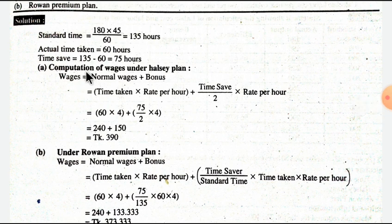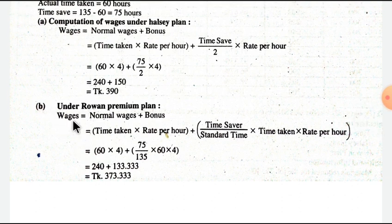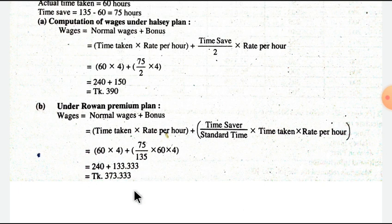Calculation of wages under the Halsey plan: wages equals normal wages plus bonus. Normal wages is the actual time taken multiplied by rate per hour. Bonus is the time saved divided by two, multiplied by rate per hour. Time taken is the actual time. Under another method, bonus is time saved divided by standard time, multiplied by time taken, multiplied by rate per hour. Time saved equals standard time minus actual time. Total calculation gives 38.333.